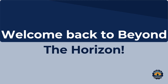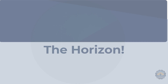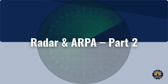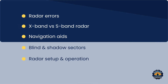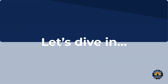Welcome back to Beyond the Horizon. Today we continue with Radar and ARPA, Part 2. We'll look at radar errors, the differences between X-band and S-band radar, important navigation aids, the concepts of blind and shadow sectors, step-by-step radar setup and operation, and finally, ground versus sea stabilization. Let's dive in.